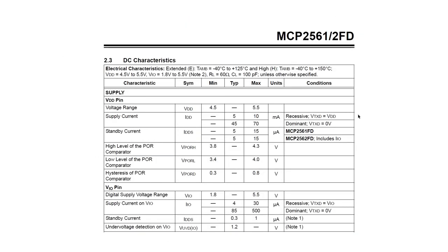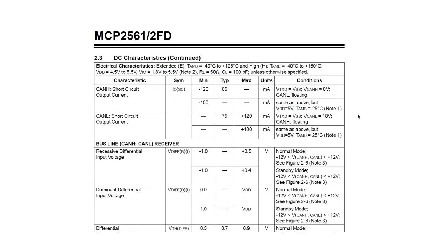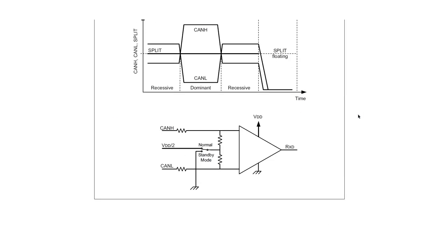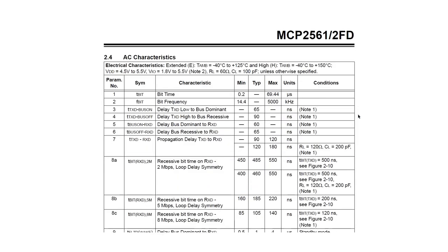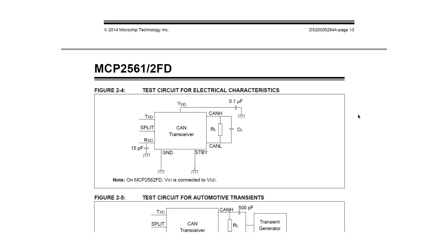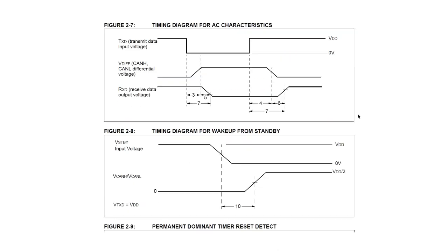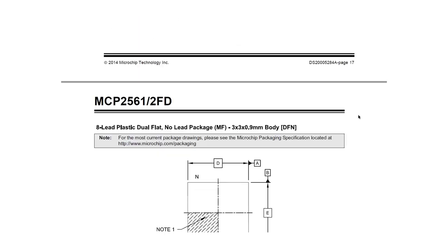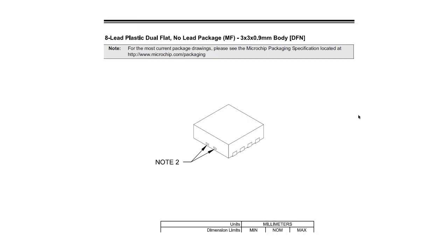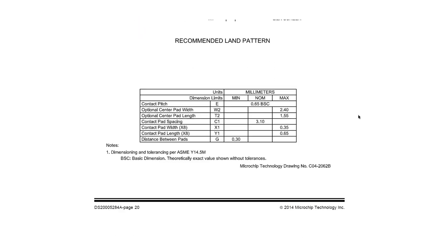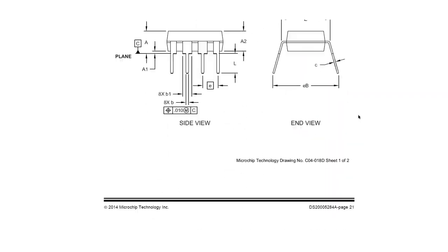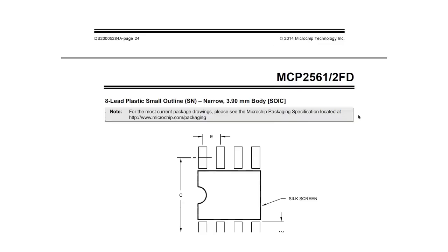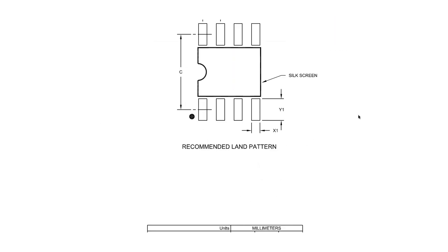In the datasheet, you will find useful information like the pin-out table for the transceiver, electrical characteristics such as CAN-H and CAN-L voltage levels for dominant and recessive logic, timing-related information like propagation delay, and more.